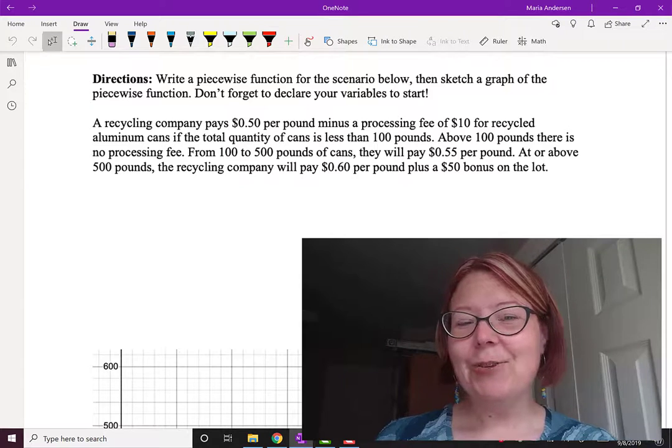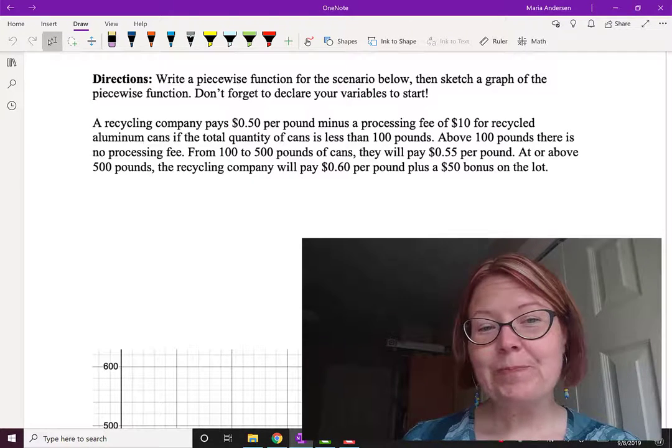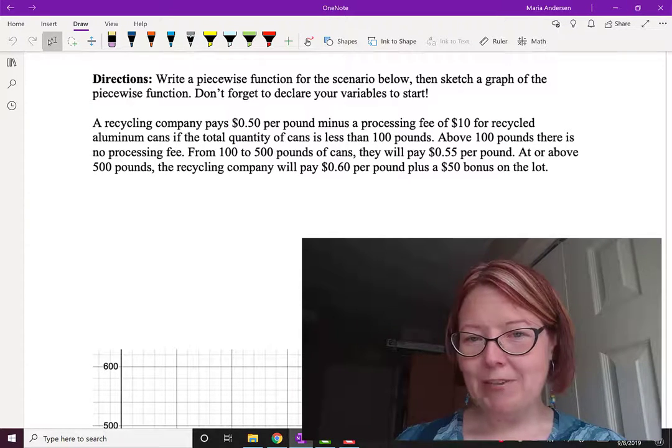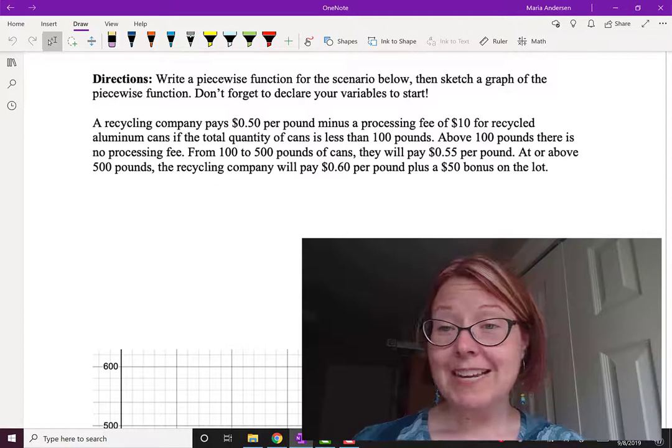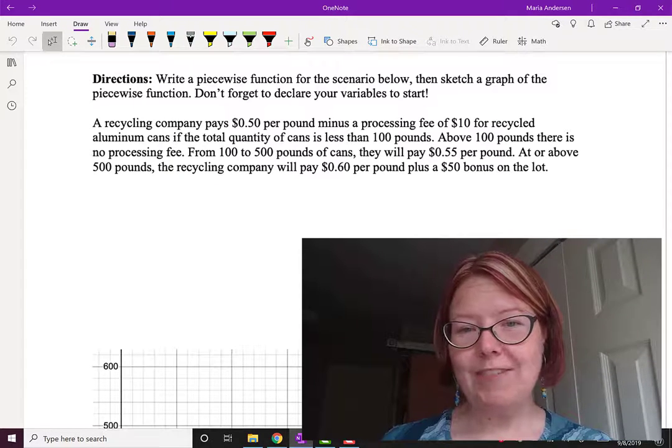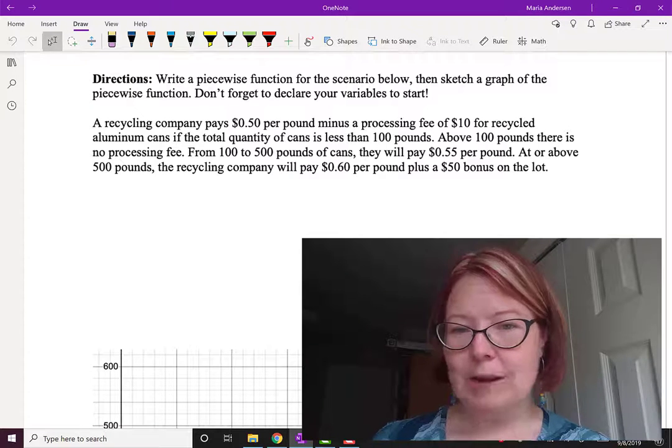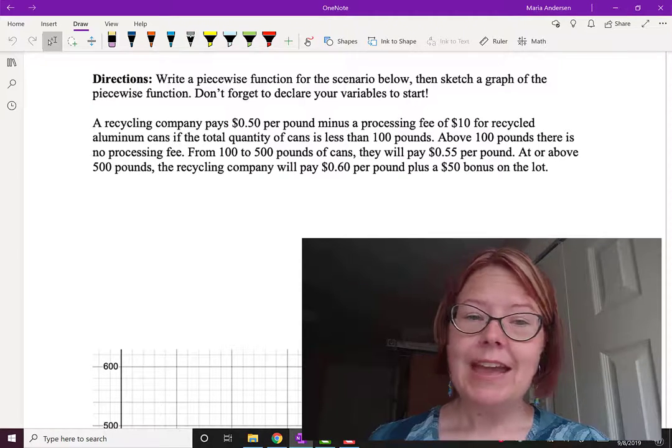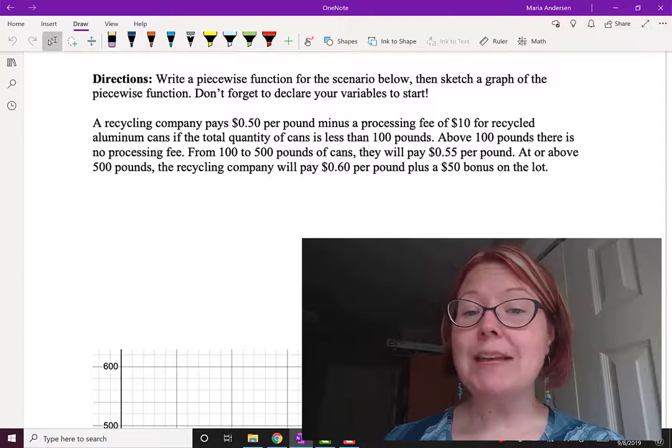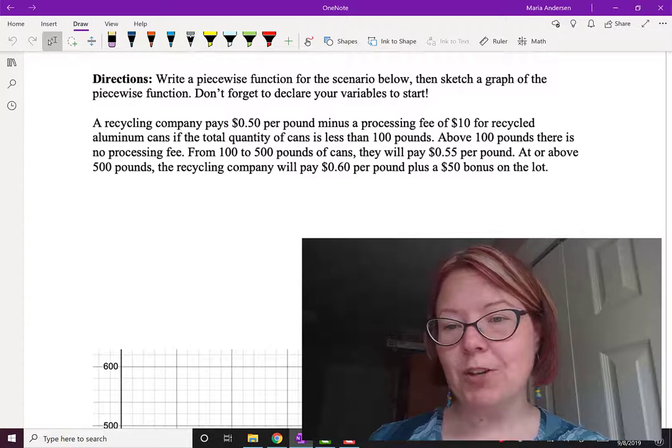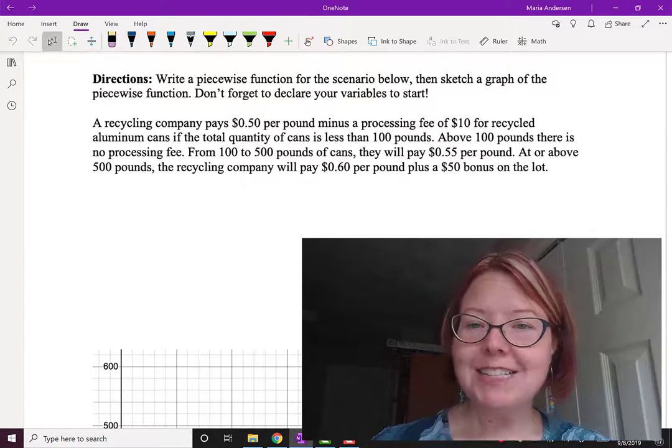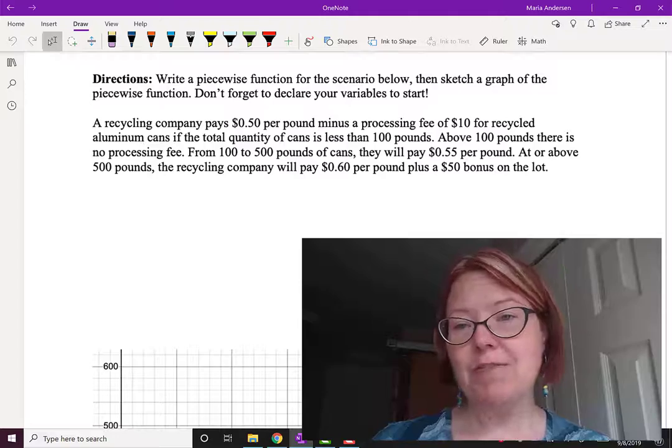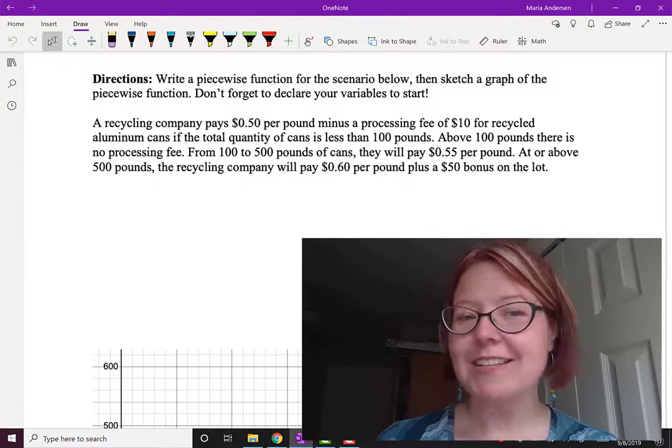Now I have a scenario that I'd like you to write a piecewise function for. I'm going to read you the scenario first. A recycling company pays 50 cents per pound minus a processing fee of 10 dollars for recycled aluminum cans if the total quantity of cans is less than 100 pounds. Above 100 pounds, there's no processing fee. So from 100 to 500 pounds, they'll pay 55 cents per pound. At or above 500 pounds, the recycling company will pay 60 cents per pound. Plus they will also give you a $50 bonus on the lot. So I want you to pause this video, declare your variables, and write a piecewise function for that scenario. Come back when you're finished and make sure you're correct before you go on to sketch a graph.